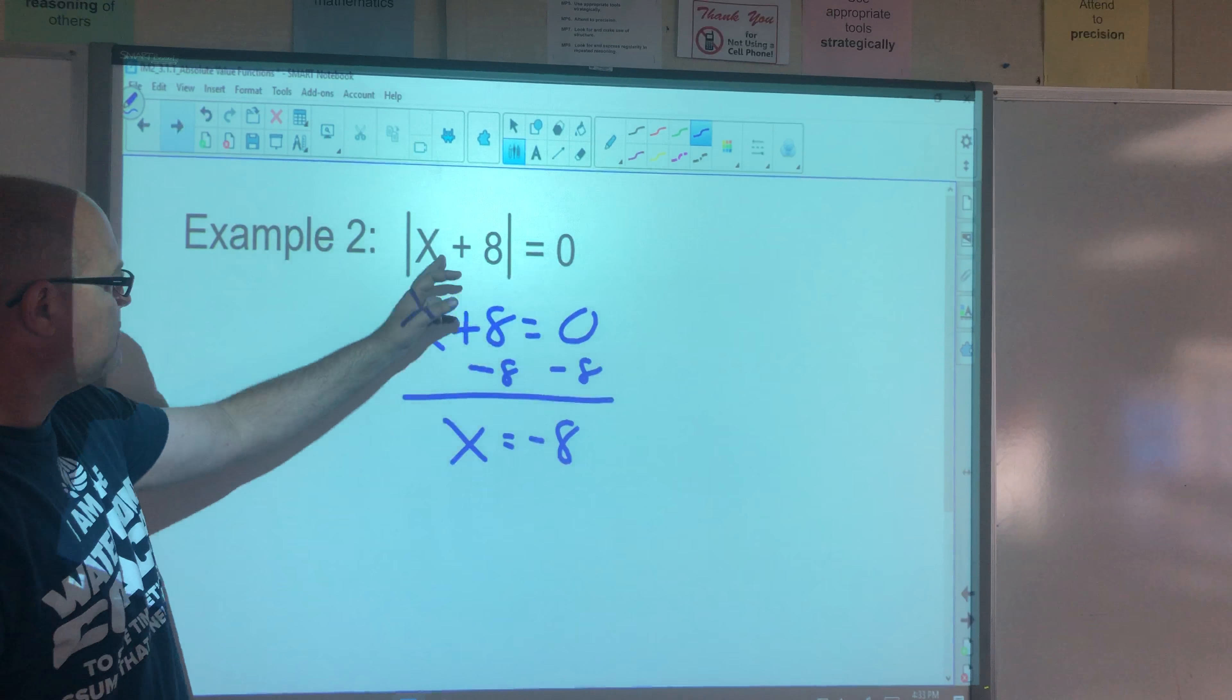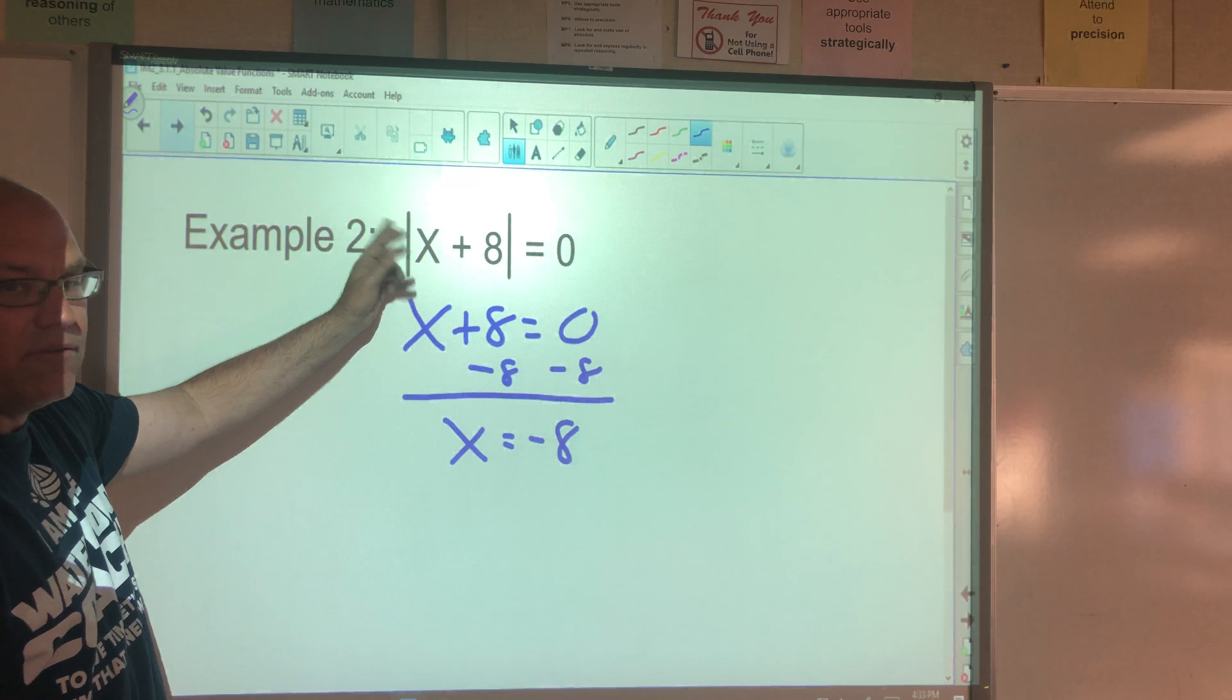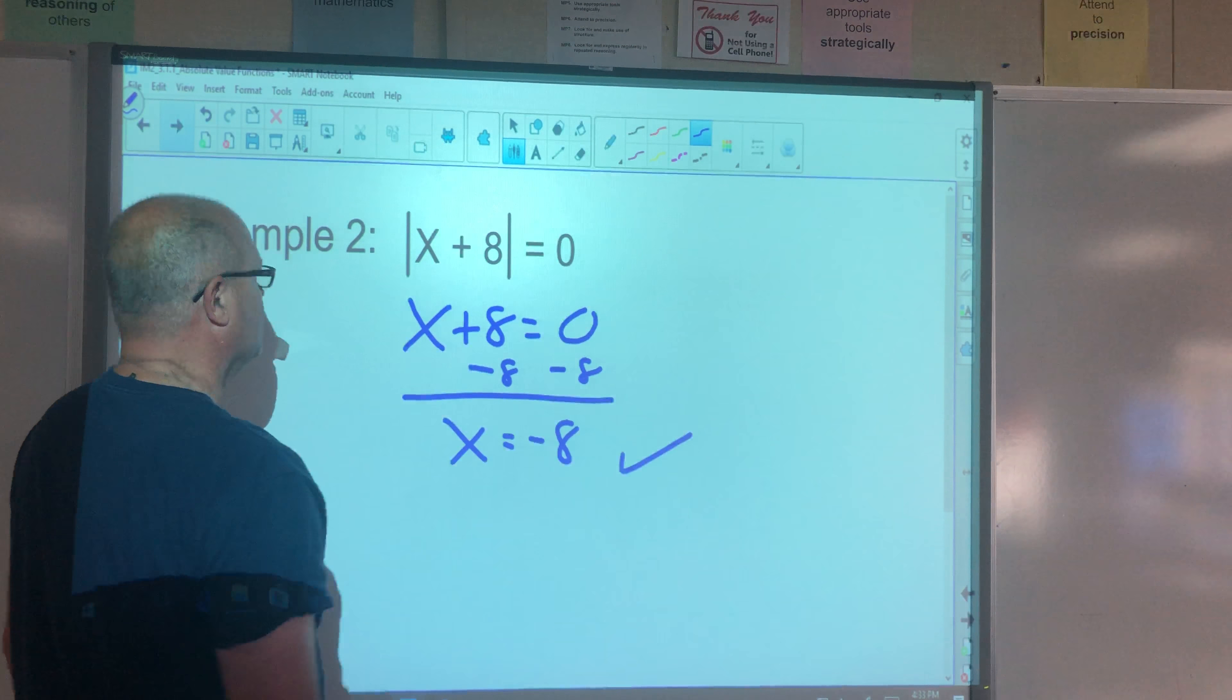Check it. Substitute back in. Negative 8 plus 8 is 0. The absolute value of 0 is 0. Check.